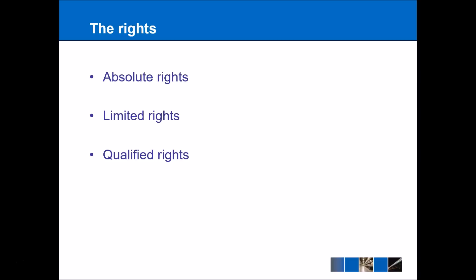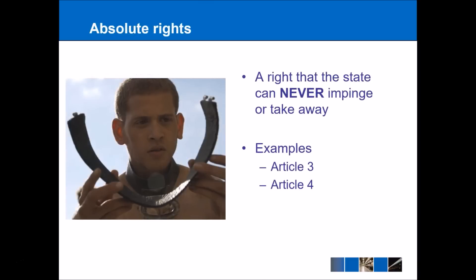There are a number of different types of rights. We've got absolute rights, limited rights, and qualified rights. Absolute rights are rights that the state can never impinge upon or take away. Article 3 is the prohibition of torture — you can never be tortured; it's an absolute right. Article 4 is the prohibition of slavery — you can never volunteer to be a slave, and no one can force you to be one. The state could never force you to work for free, for example.